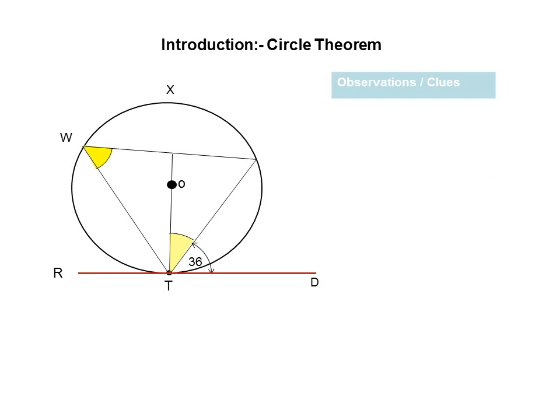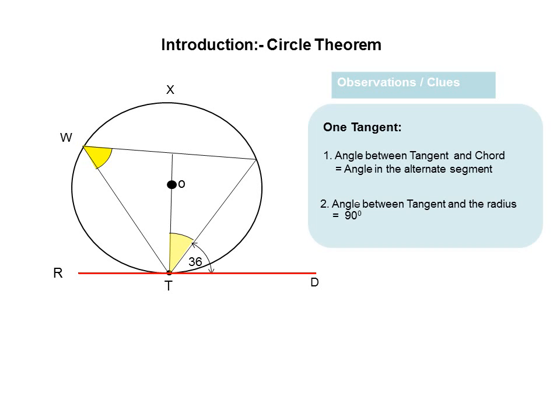In our third example — and this is a very important one, it comes up a lot in our exam — the most obvious clue you should note is that it has one tangent. Once you see a tangent, bells should go off in your head because 90% of the time you will be asked to apply the theorem which says the angle between the tangent and the chord is equal to the angle in the alternate segment. You may also be asked to apply the theorem which says the angle between the tangent and the radius is equal to 90 degrees. I will spend time going through those two particular theorems.